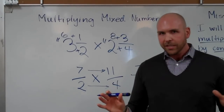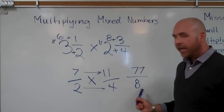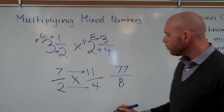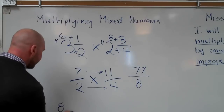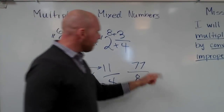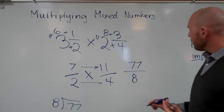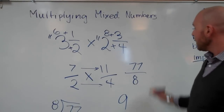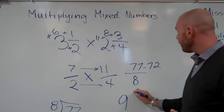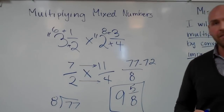You're almost there, but remember you have to go that extra step of simplifying your improper fraction. You can do this by dividing eight into seventy-seven. How many times does eight go into seventy-seven? I'm thinking multiples — it goes nine times. Nine times eight is seventy-two. Seventy-seven minus seventy-two is five, and your denominator is eight. Your answer is nine and five-eighths.